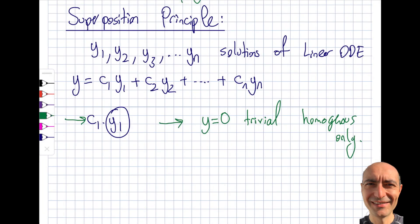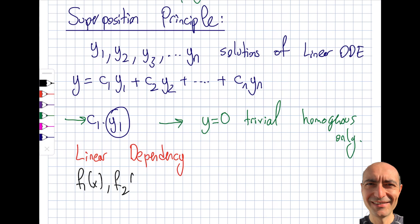The next thing I want to talk about is linearly independent and linearly dependent. The concept is called linear dependency — and obviously independency as well. Let's say that I'm given some functions f1(x), f2(x), all the way to fn(x) — as general as it gets.